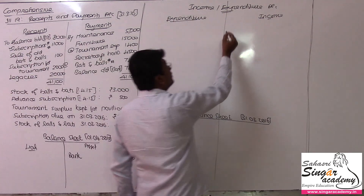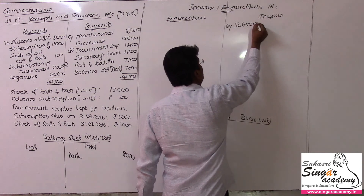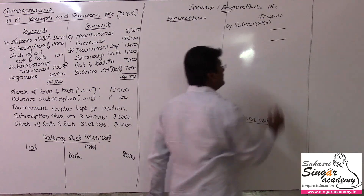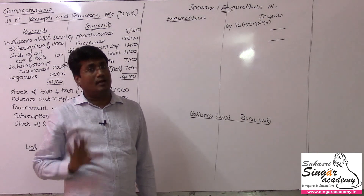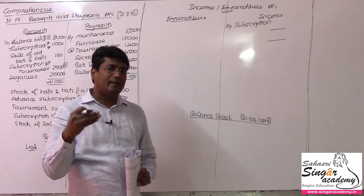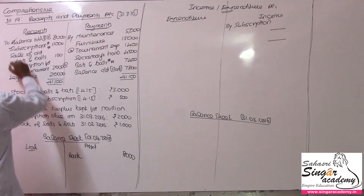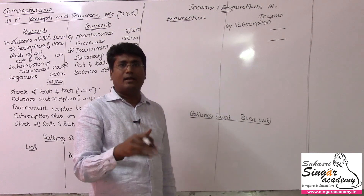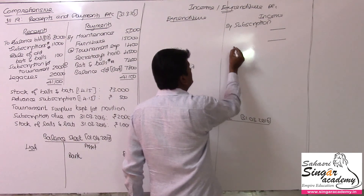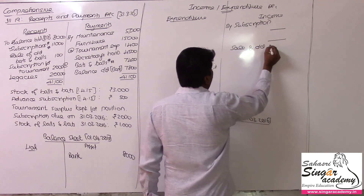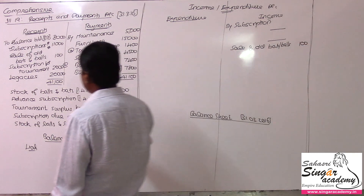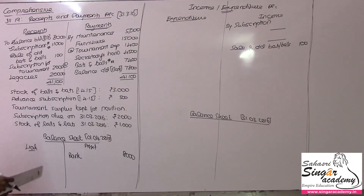Subscription income side: by subscription, posted to income side. Rent adjustment is there — if you have four adjustments, you draw four lines. Sale of old bats and balls posted on the income side. Tournament subscription — the surplus in the tournament goes to pavilion construction on the balance sheet.